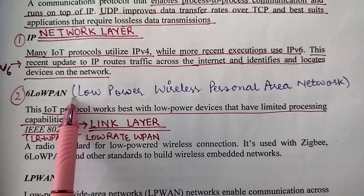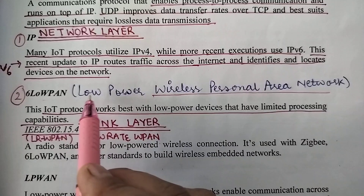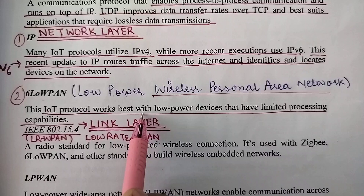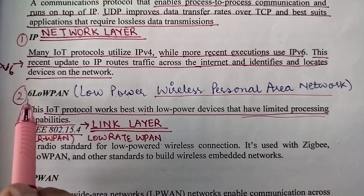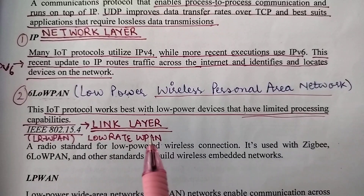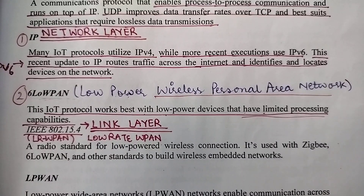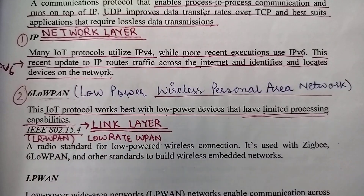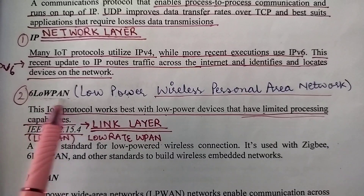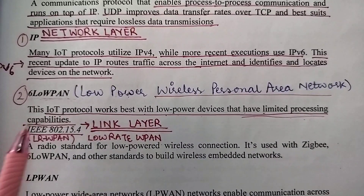The full form of 6LoWPAN is 6 Low Power Wireless Personal Area Networks. It is used for wireless personal area networks with low-power devices. This IoT protocol works best with low-power devices that have limited processing capabilities. The whole idea was that devices with low power and limited processing capabilities could not previously participate in IoT because they were unable to use IP. With 6LoWPAN, even the smallest devices with low power and limited processing capabilities can use Internet Protocol and participate in IoT.